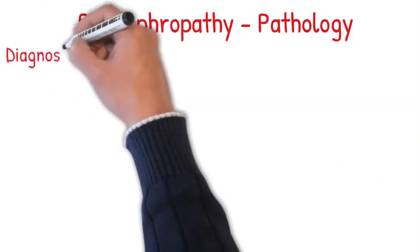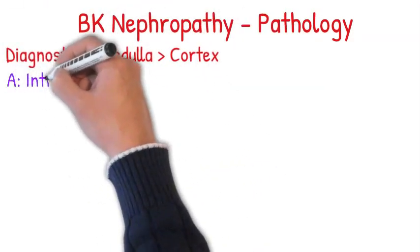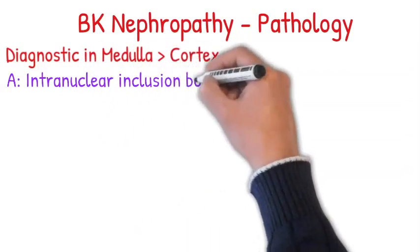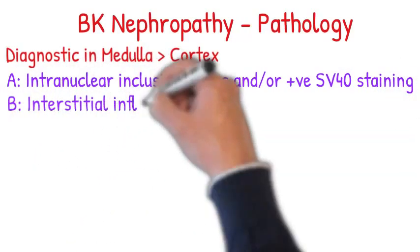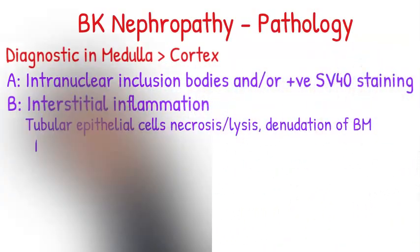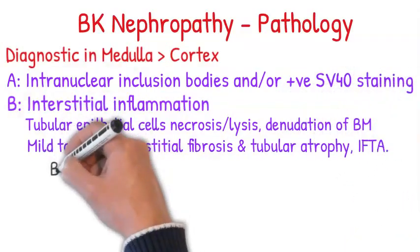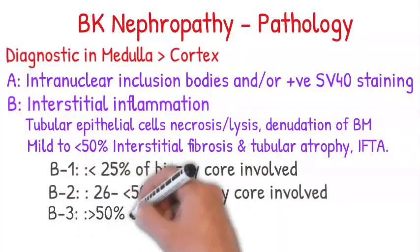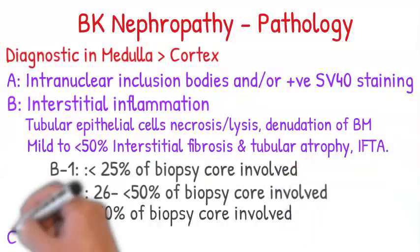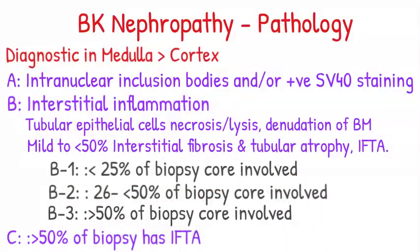Moving on to BK nephropathy pathology — it's more diagnostic in the medulla than cortex. Stage A is intranuclear inclusion bodies and/or positive SV40 staining, which appears brown. Stage B has interstitial inflammation and tubular epithelial cell necrosis, with mild to less than 50% IFTA (interstitial fibrosis and tubular atrophy). B1 is less than 25% of the biopsy involved; B2 is 26 to less than 50%; B3 is more than 50% involved. Stage C is more than 50% of the biopsy with IFTA.